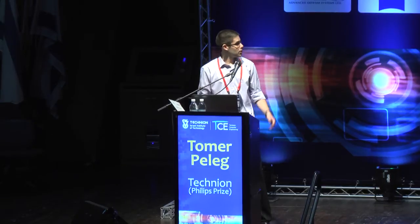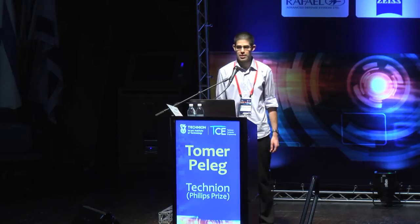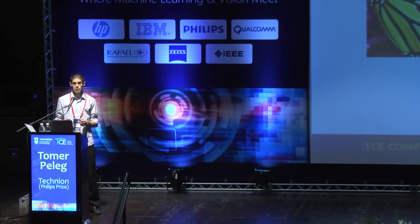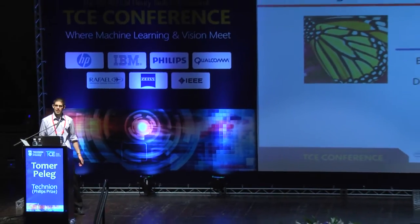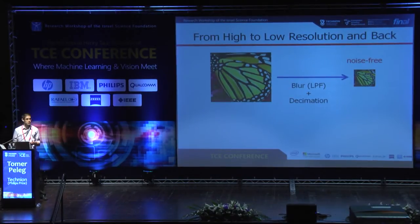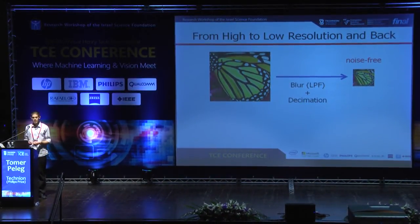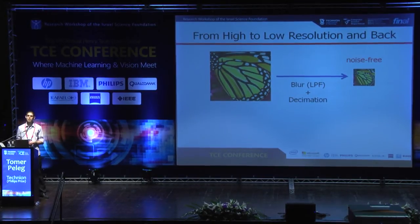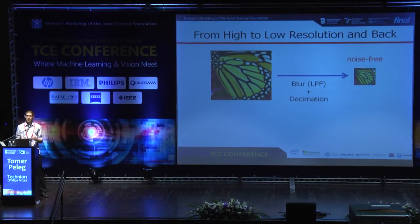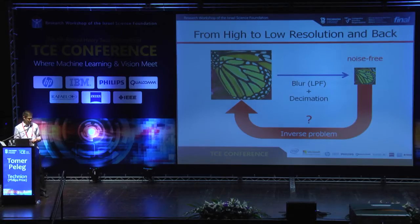Let me first present the problem we would like to solve. We assume the following degradation model: we have a high resolution image that undergoes blur using some known low-pass filter and then it's decimated, meaning you take every second or third pixel in each direction, and we assume a noise-free setup. You get a low resolution image and our goal is to go back from the low resolution to the high resolution. This formulates our inverse problem.